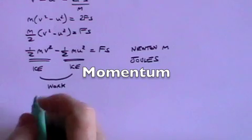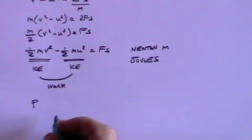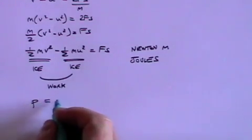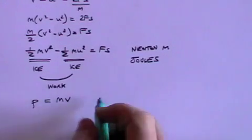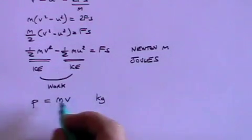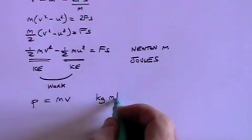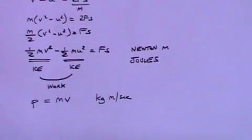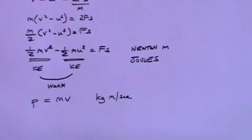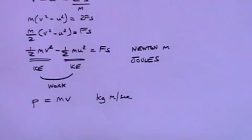Now we come to momentum. Momentum, often labeled by the letter p, is mass times velocity. Its units are kilograms times meters per second — kilogram meters per second. And force, as we shall see, is the rate of change of momentum.